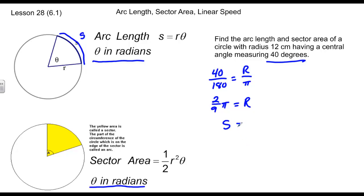Therefore, S is equal to our radius 12 times two-ninths pi. We can put that in a calculator and get an approximate. That's equal to roughly 8.37, and that'll be in centimeters.